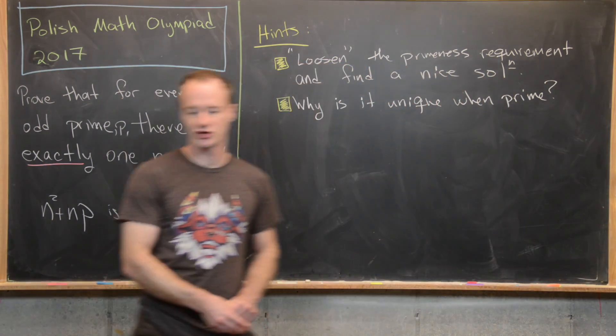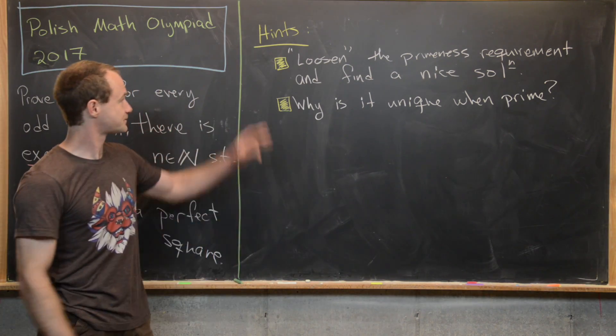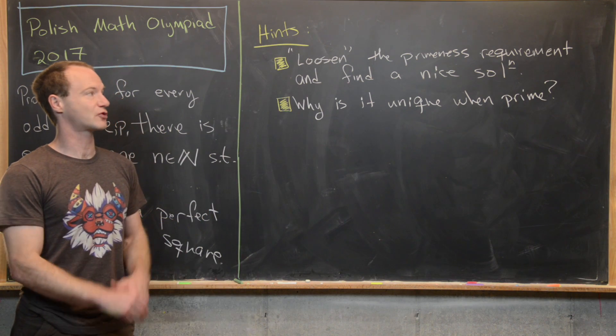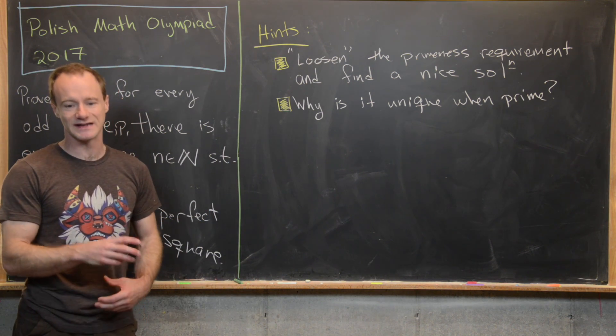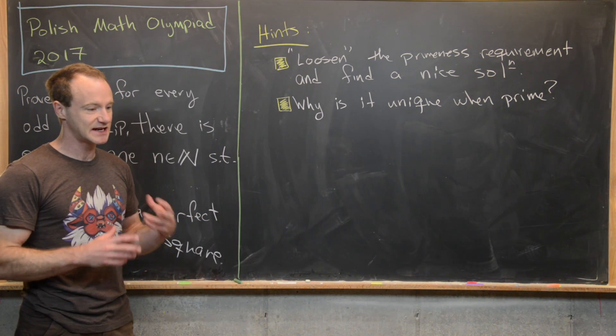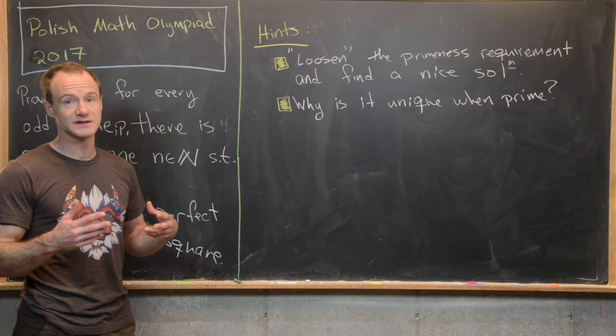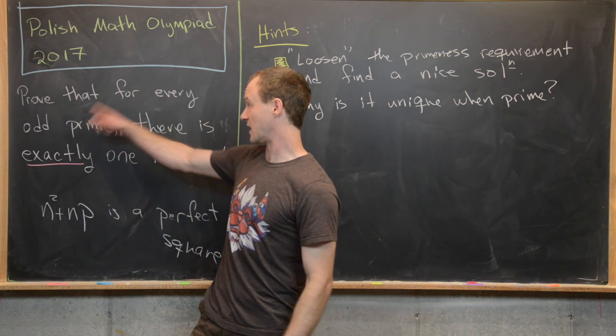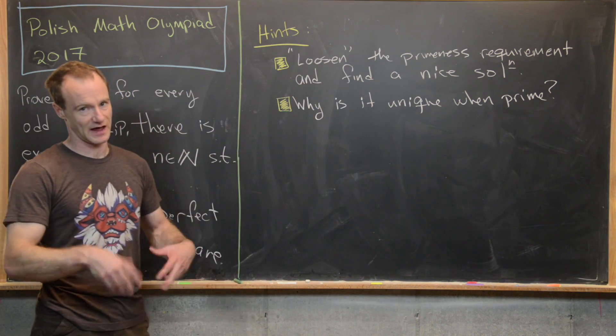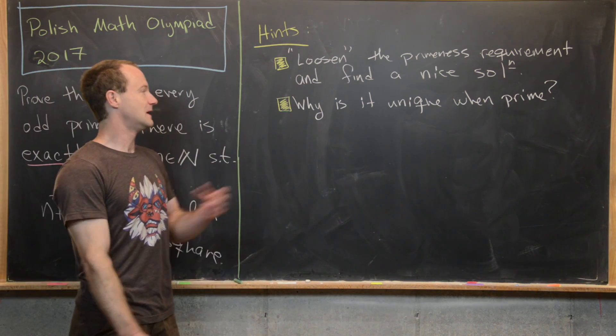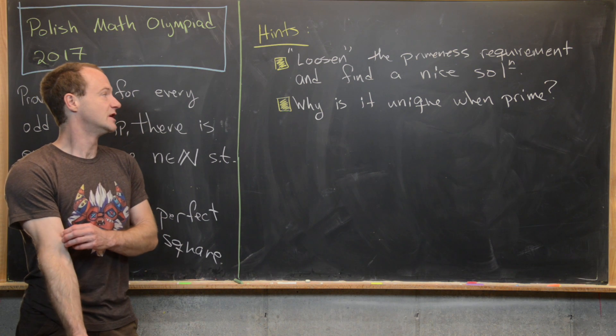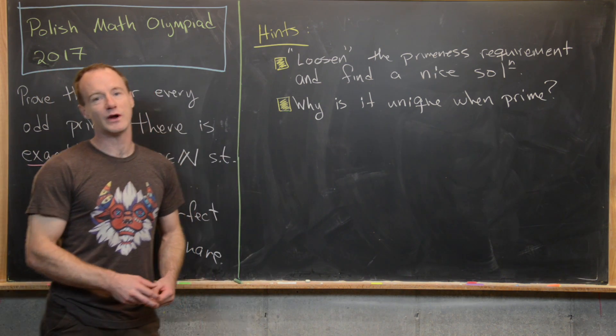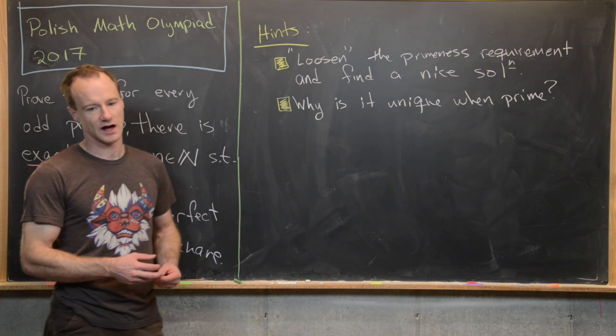Before we get into the solution, I want to look at a couple of hints. My first hint is to loosen this primeness requirement and find a nice solution. In other words, instead of looking at primes, maybe look at all odd numbers. Then my next hint is to go back and find out why is this solution unique when you have a prime and not just an odd number.